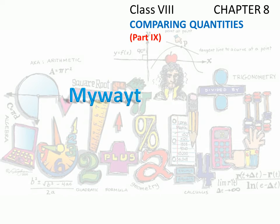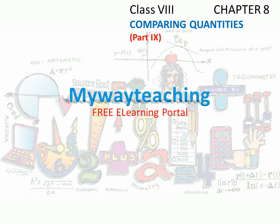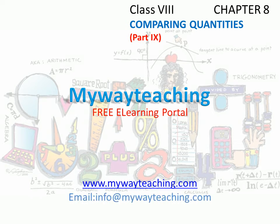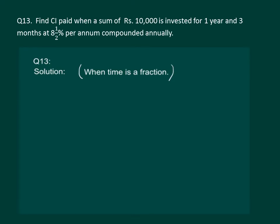Hello friends, this video is brought to you by mywayteaching.com. The question on the slide says: find the compound interest paid when a sum of rupees 10,000 is invested for one year and three months at eight and a half percent per annum compounded annually.